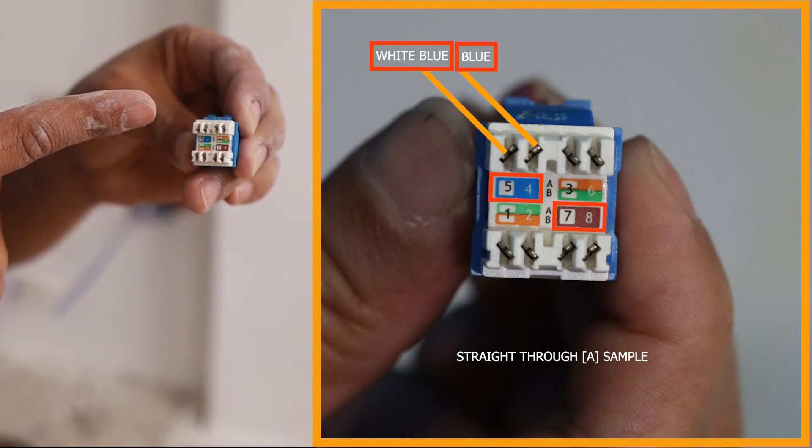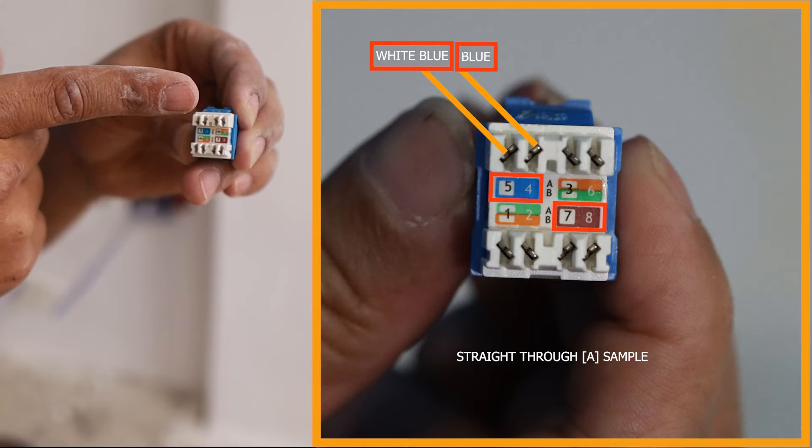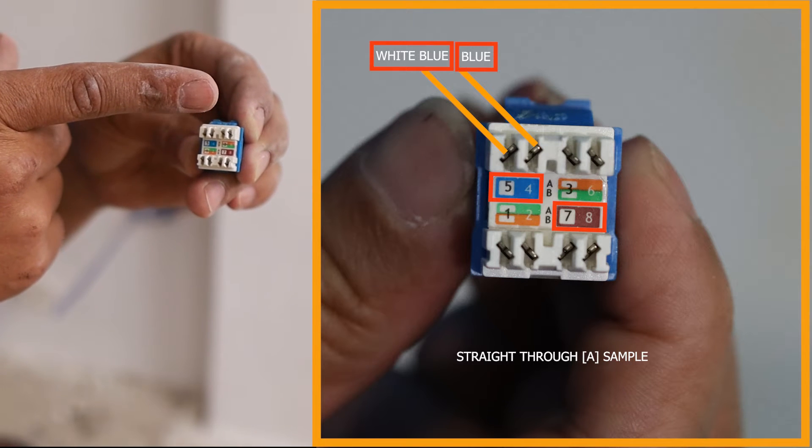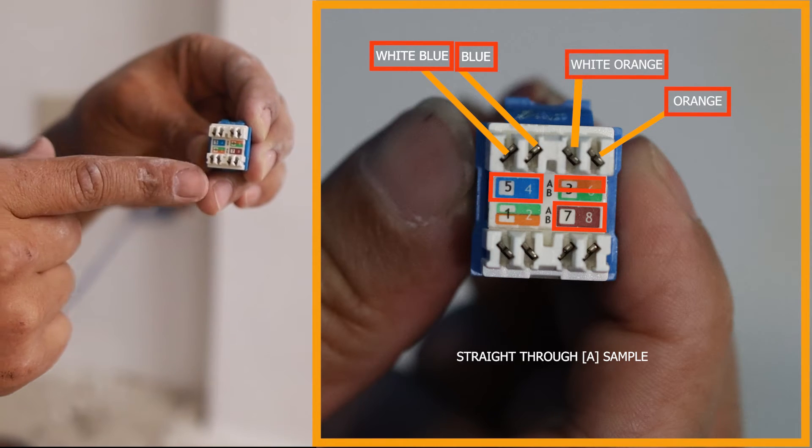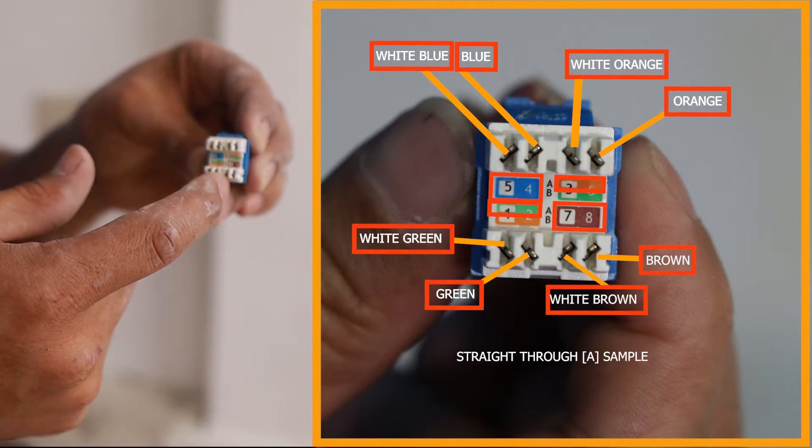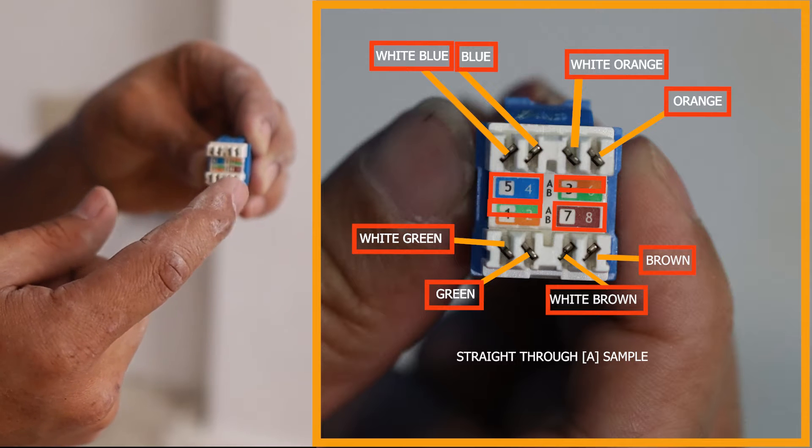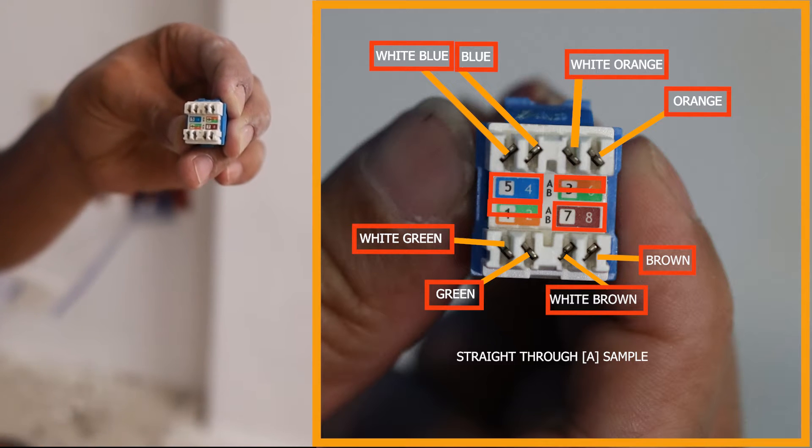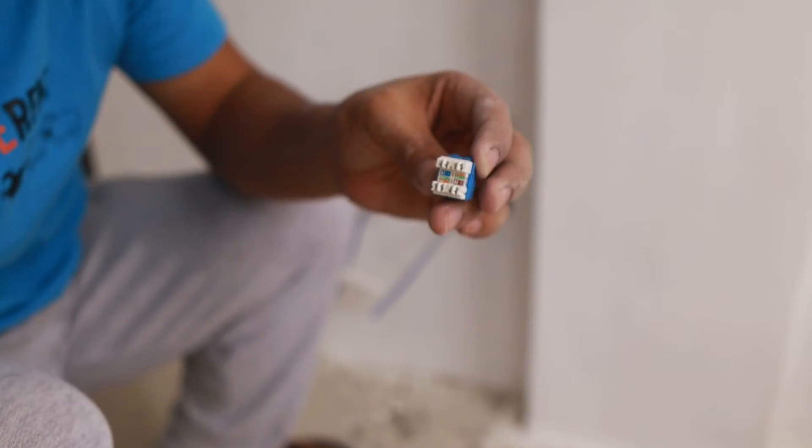So if you're going to use A then you follow white, blue, blue and then white, orange, orange and then here at this part you do white, green, green then white, brown, brown. Simple as that. You can have that color coding.